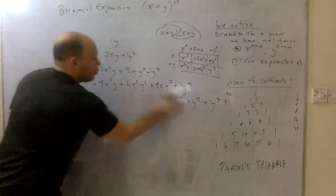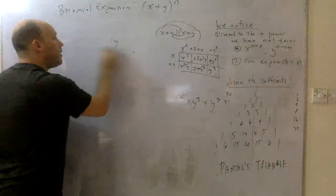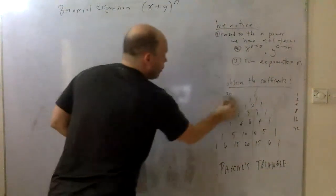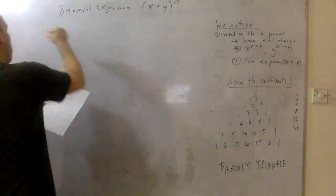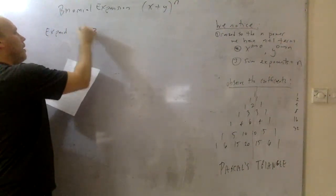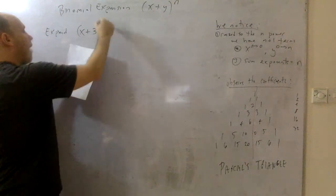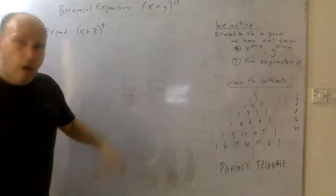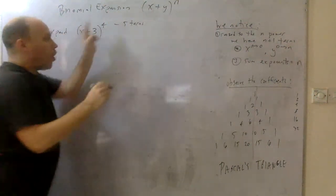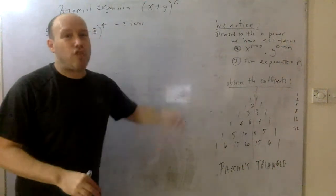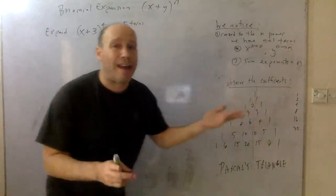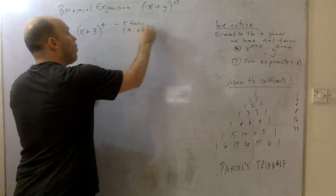Let's do an example. Expand x plus three to the fourth power. This is to the fourth power, so I know there are five terms. I go to Pascal's triangle and get one, four, six, four, one — that is five terms. I also know x starts with x to the fourth times three to the zero, then x to the third times three to the first, x squared times three squared, x to the first times three to the third, and three to the fourth.